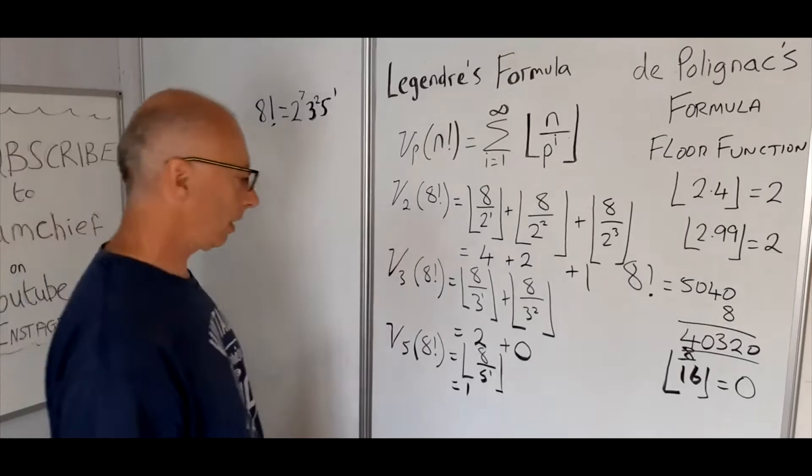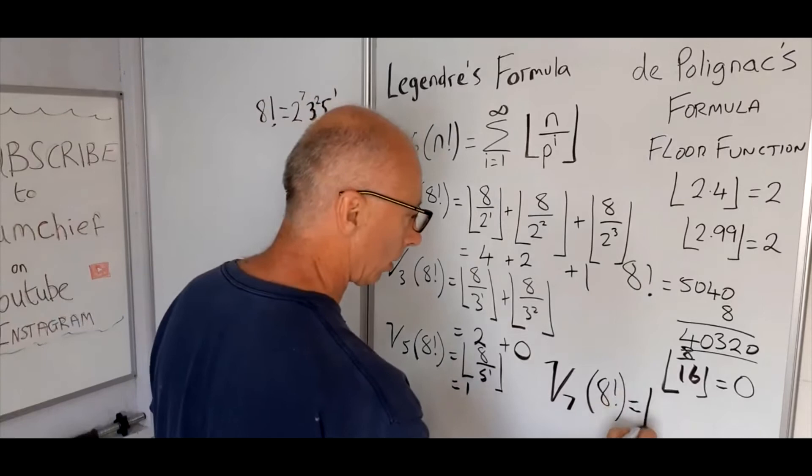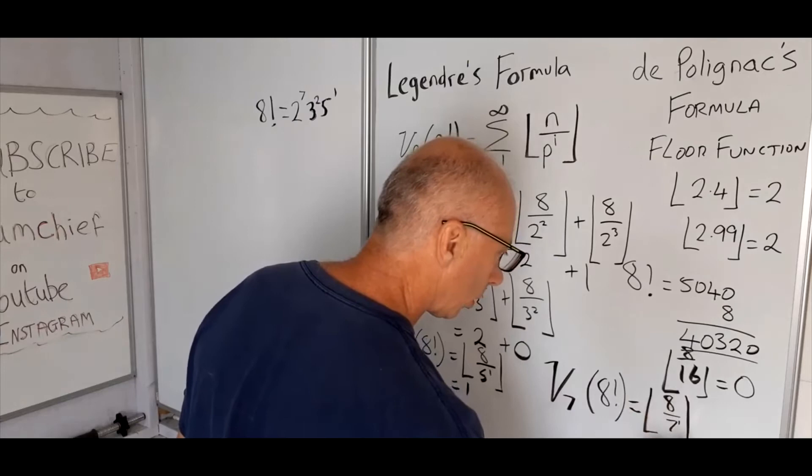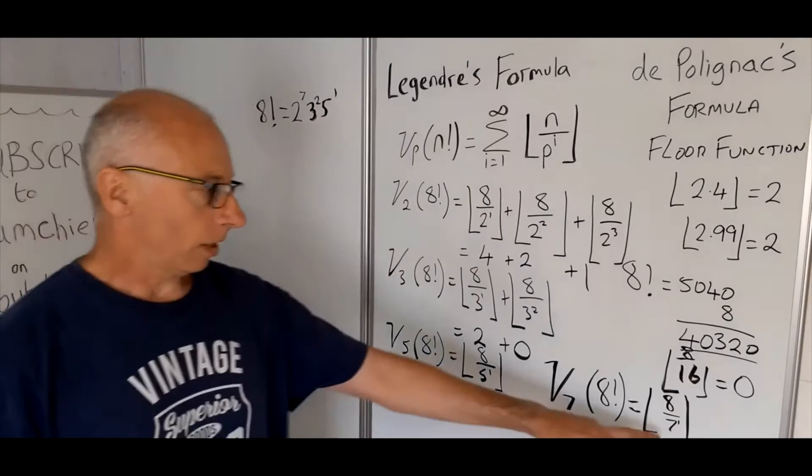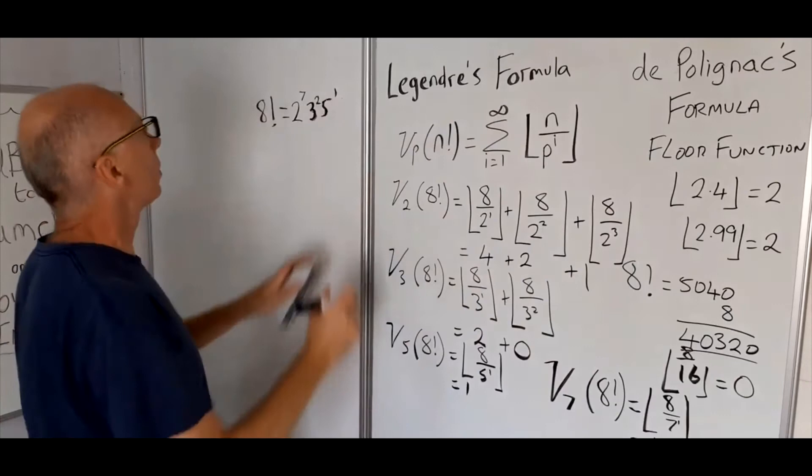And then the next and the last prime factor of 8 is 7. So nu_7 of 8 factorial, so Legendre's formula for 7. But it's just going to give us 1, isn't it? One value here, 8 divided by 7 to the power of 1. So that's just going to give us 1. When we get to 7 to the power of 2, that's going to give us 49, we're just going to get 0, so they're all 0 after that. And then it's 7 to the power of 1.